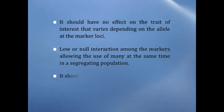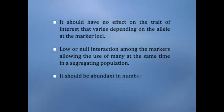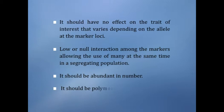Low or null interaction among the markers, allowing the use of many at the same time in a segregating population. It should be abundant in number and polymorphic. To avoid problems specific to morphological markers, DNA-based markers have been developed. They are highly polymorphic, with simple inheritance, abundantly occurring throughout the genome, and easy and fast to detect.